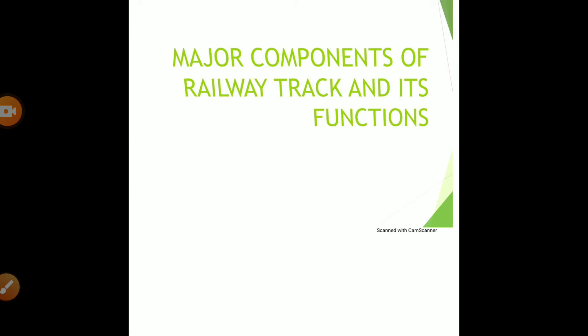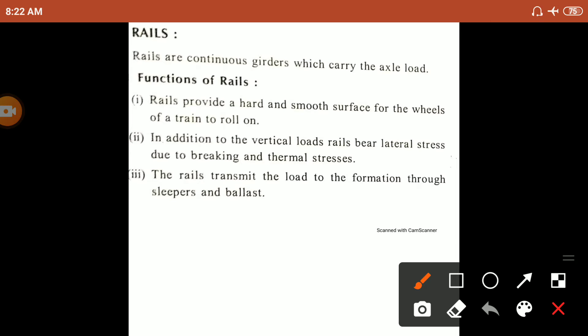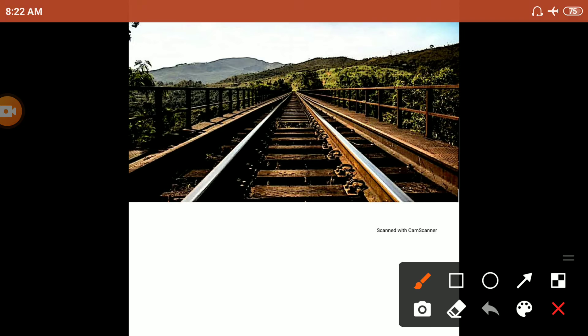Dear students, I wish to discuss the major components of railway tracks and their functions. The major components of a railway track are: first, rails.